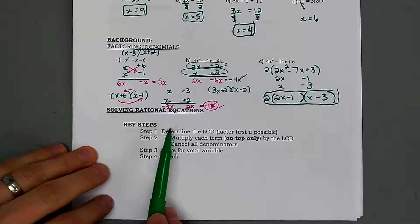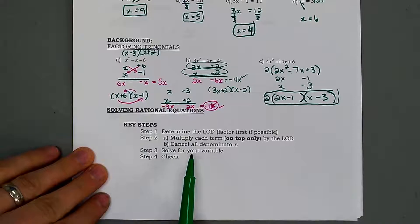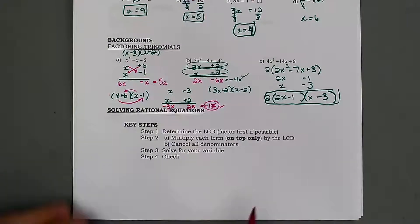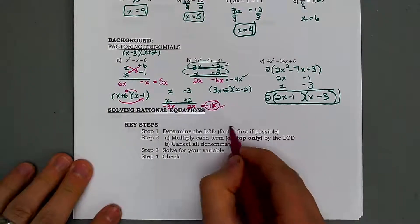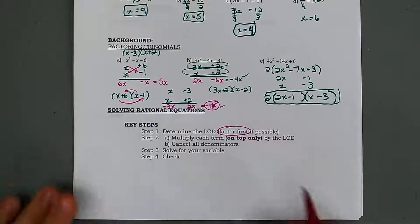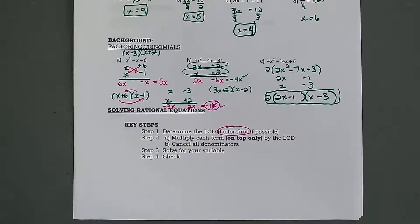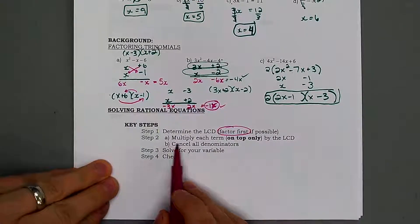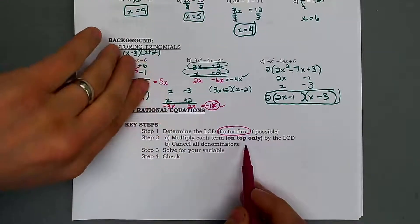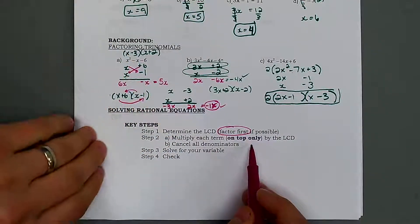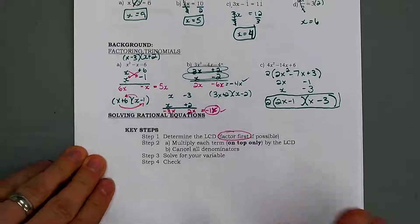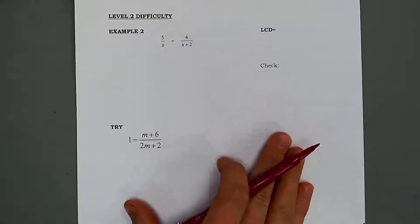For solving rational equations there are some steps. One of the biggest things to remember is to factor first if possible — we want to be able to see the parts we want to get rid of. Then we multiply each numerator by the LCD to cancel out the denominators.